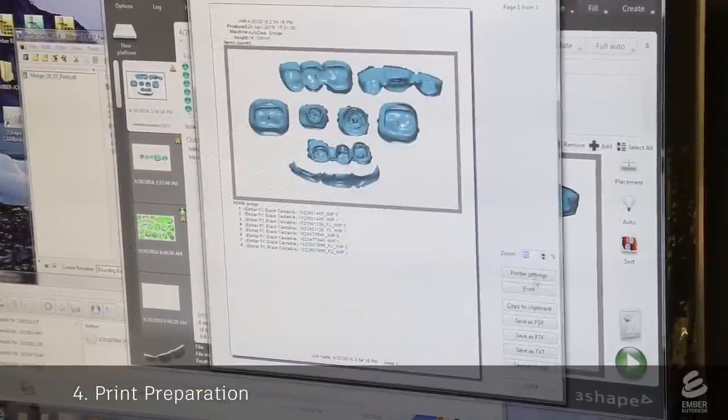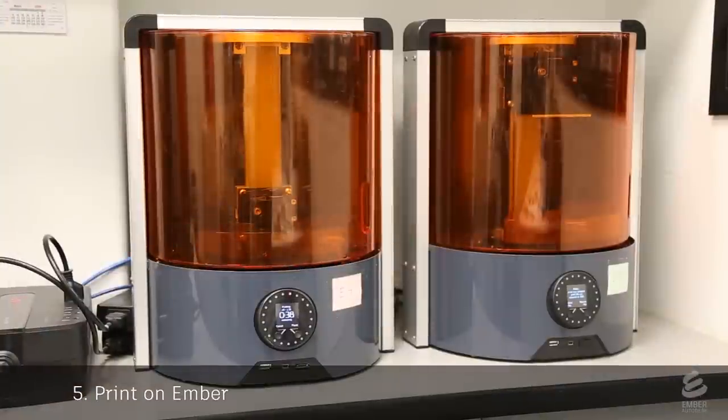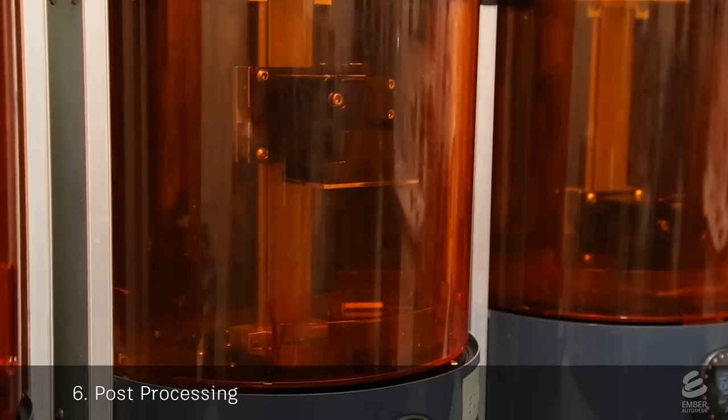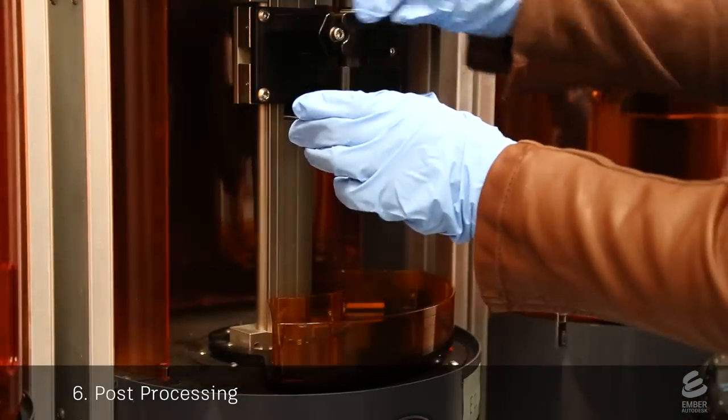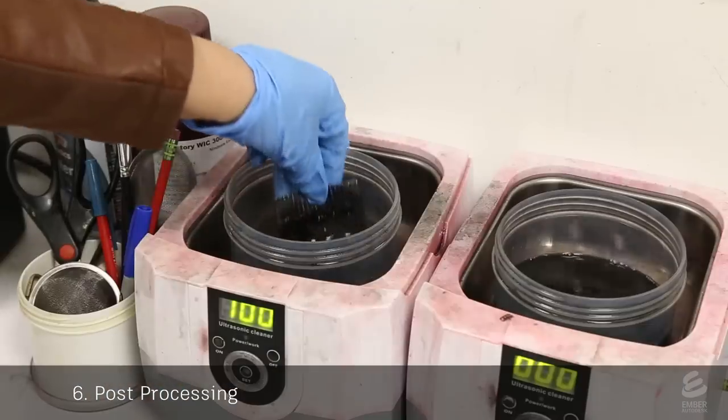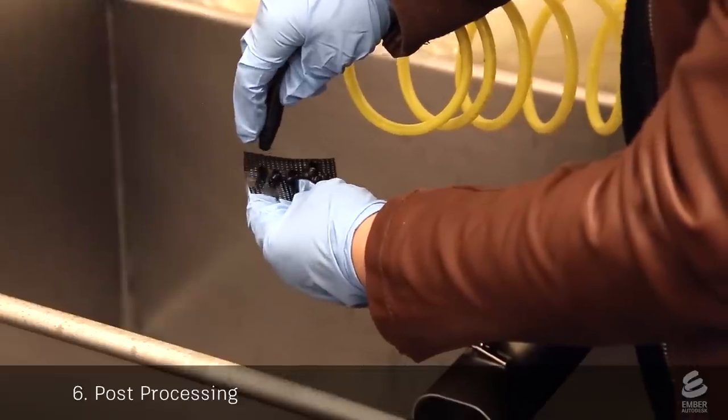Now this collection of crowns is sent to an Ember printer. A tech starts the printer. The print time is typically around 40 minutes. Glidewell uses a specially formulated resin, which will completely burn out later in the process. After the print is done, a tech removes the build head from the printer, scrapes off the print, washes it in alcohol, and dries it with an air gun.